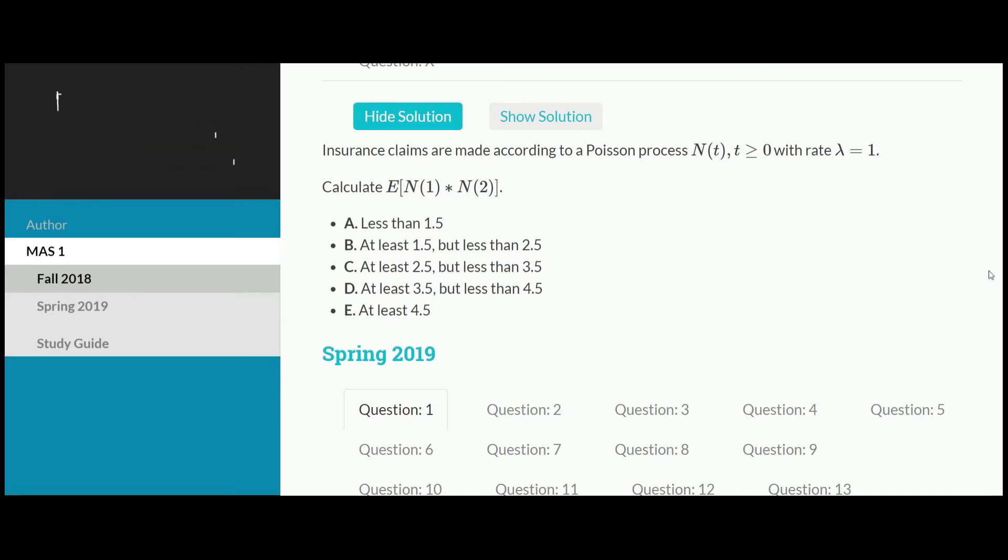Insurance claims are made according to a Poisson process, n of t, where t is greater than or equal to 0 with rate lambda equals 1. Then, calculate the expected value of n of 1 multiplied by n of 2.